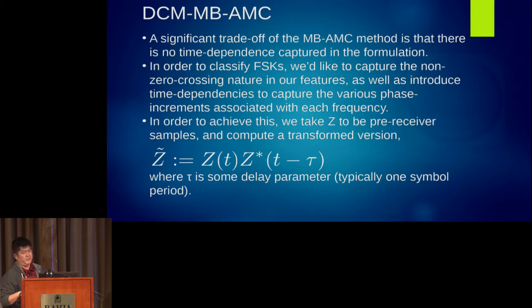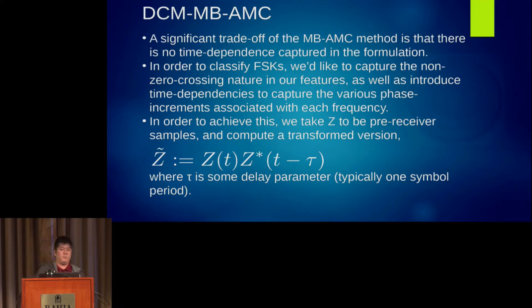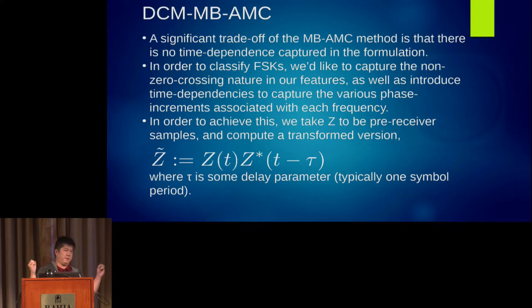A significant trade-off in the old formulation is that there's no time dependence captured. All the input samples and symbols were considered independent. In order to classify the various FSKs, we'd like to know how many different levels there are and how much frequency change there is between each symbol. We can do that delay-conjugate-multiply operation to achieve this, and the idea is to do this DCM and then put the results straight into the same old system as last year.